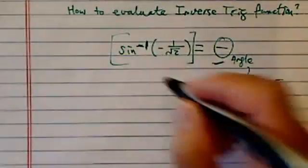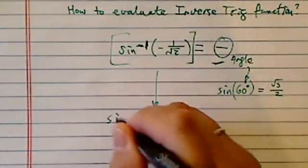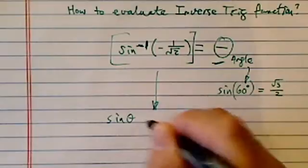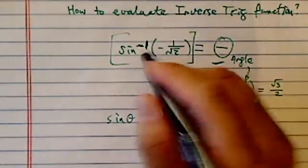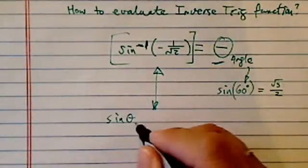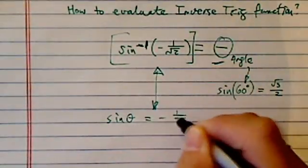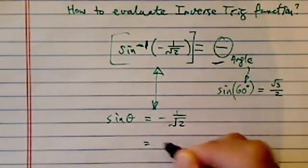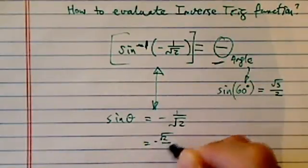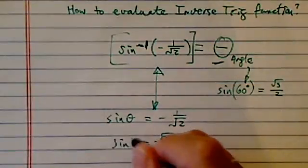Once you realize that, it's pretty easy, because the equation of the inverse becomes: sine of theta is equal to minus radical 2 over 2, which is really radical 2 over 2 for sine of theta.